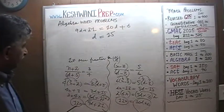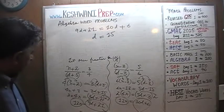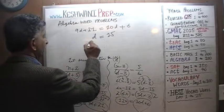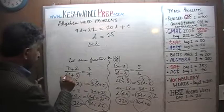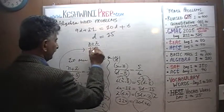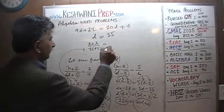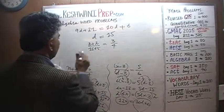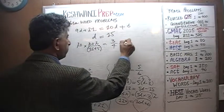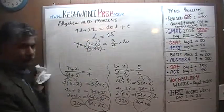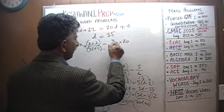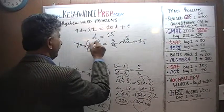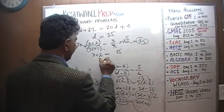Which equation shall we use to find N? Let's use the first equation: (N plus 2) over (D plus 5) equals 3 quarters. D is 15, so D plus 5 is 20. Multiply both sides by 20: the denominators cancel, giving N plus 2 equals 15, which means N equals 13.